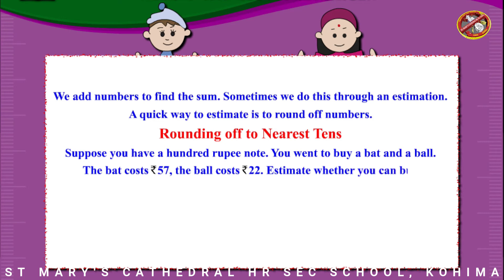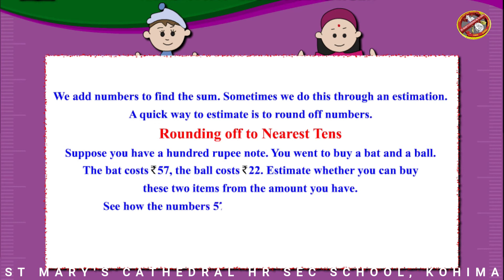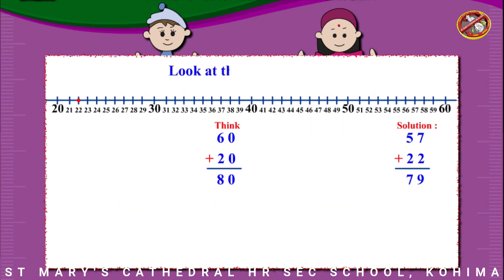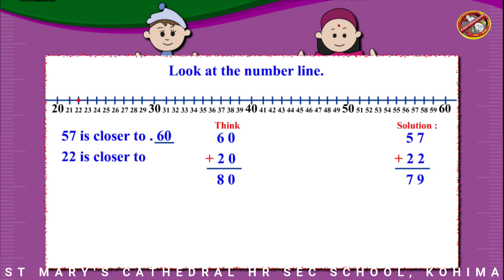Estimate whether you can buy these two items from the amount you have. See how the numbers 57 and 22 can be rounded off to tens. Look at the number line. 57 is closer to 60. 22 is closer to 20. The estimated cost is about rupees 80.